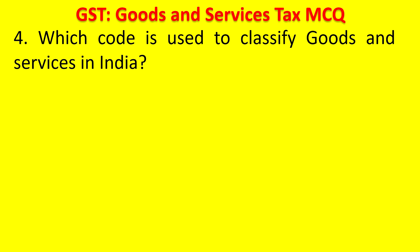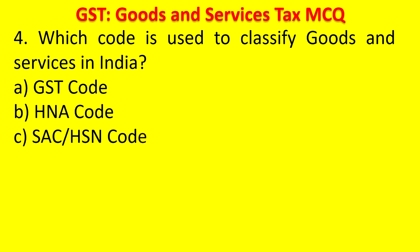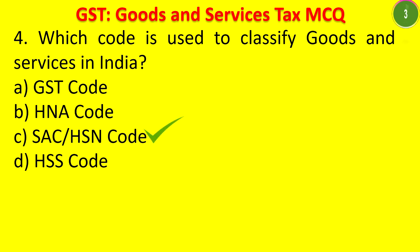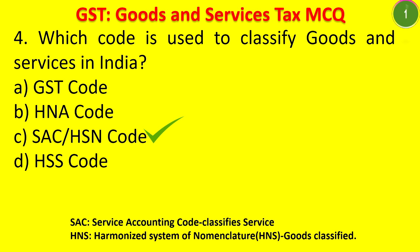Question 4: Which code is used to classify goods and services under GST in India? Options: GST code, HNA code, SAC or HSN code, HSS code. The answer is SAC or HSN code. SAC means the Service Accounting Code — that is the classification of services. HSN, the Harmonized System of Nomenclature, is for goods classification.